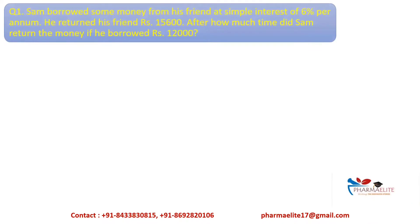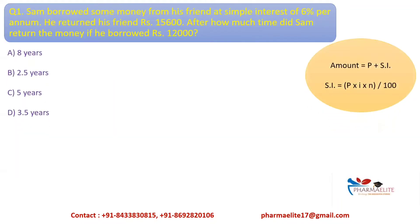Starting with the first question: Sam borrowed some money from his friend at a simple interest of 6% per annum. He returned Rs. 15,600. After how much time did Sam return the money if he borrowed Rs. 12,000? The formula used here is: Amount = P + SI, and SI = P × I × N / 100.